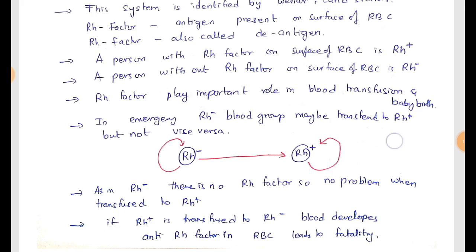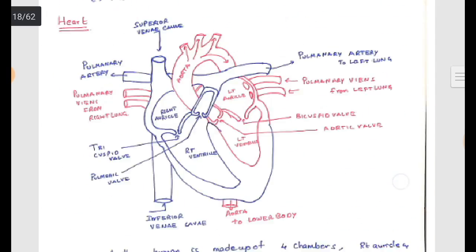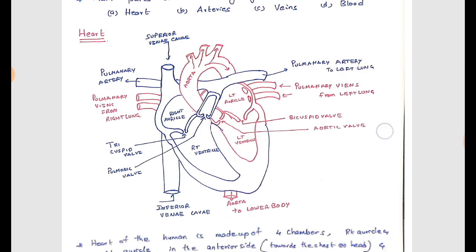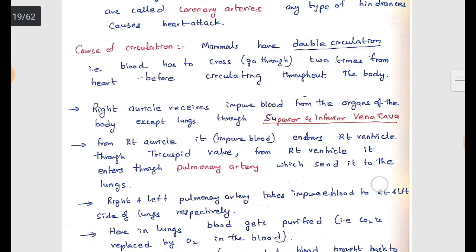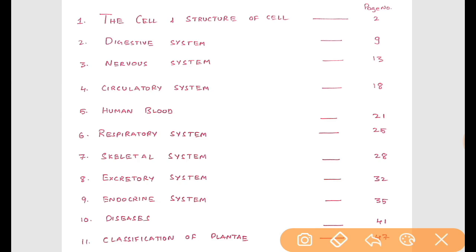That's all from human blood. You can see the notes which I am explaining from. I have given good diagrams and explanations in the circulatory system notes, where I have covered each and every point. Human blood is an extension to the circulatory system. You can also find other topics like respiratory system, skeletal system, excretory system, endocrine system, human diseases, classification of plants, and photosynthesis, which I will explain in coming classes. Please download the biology notes prepared by me — it is extremely useful for your exam. You can find the download link in the description box.